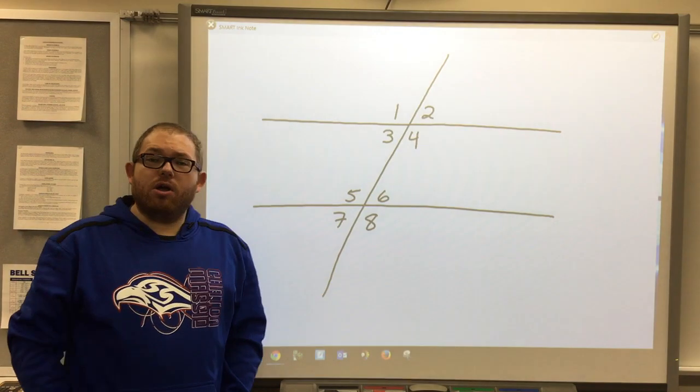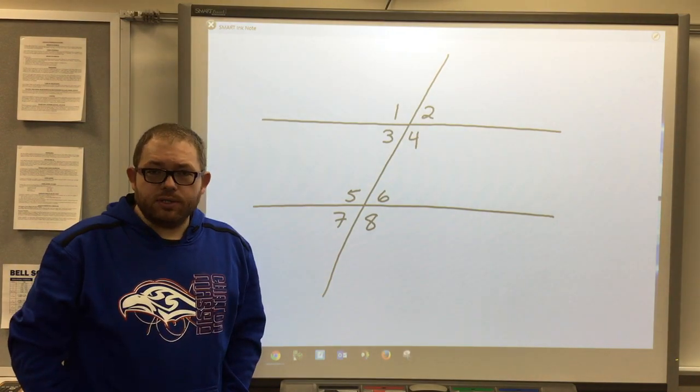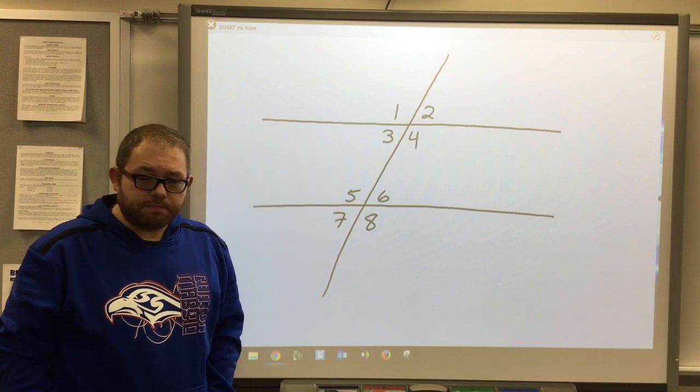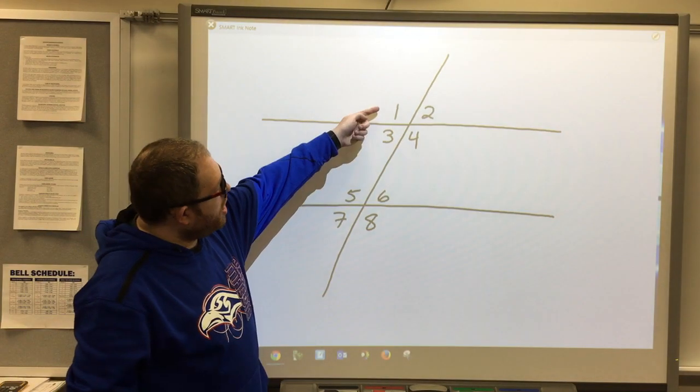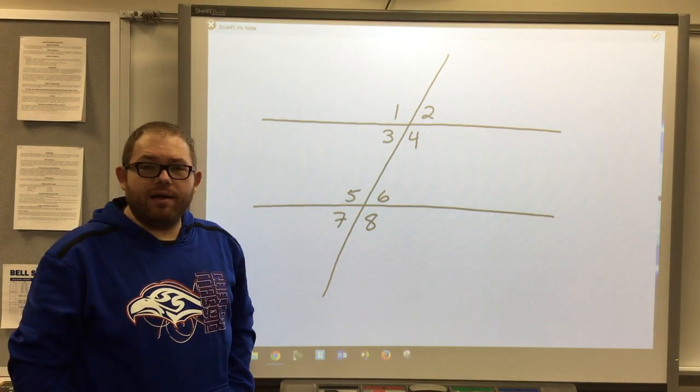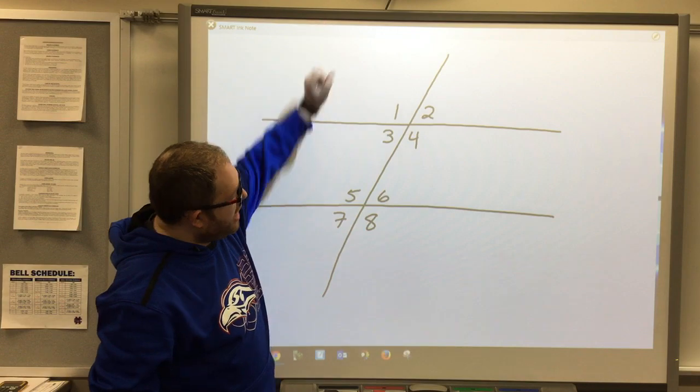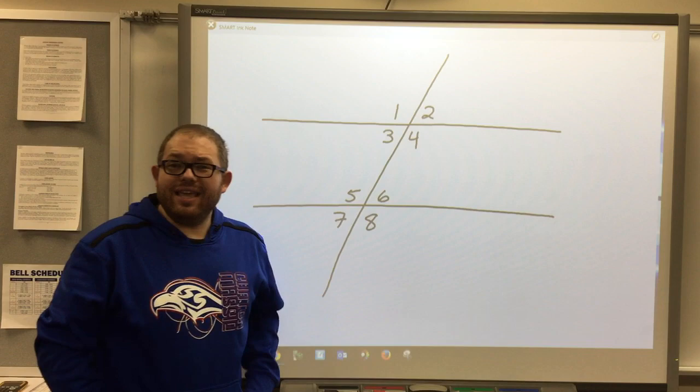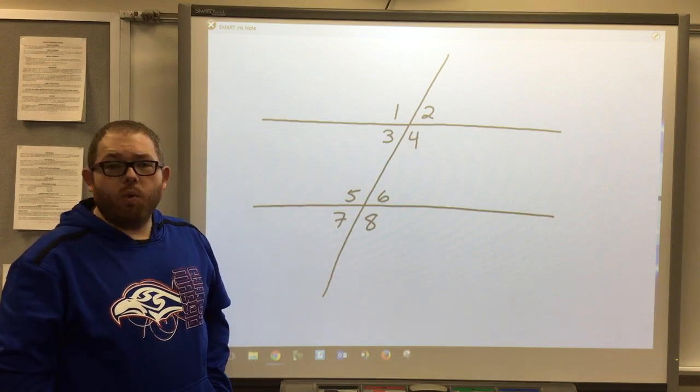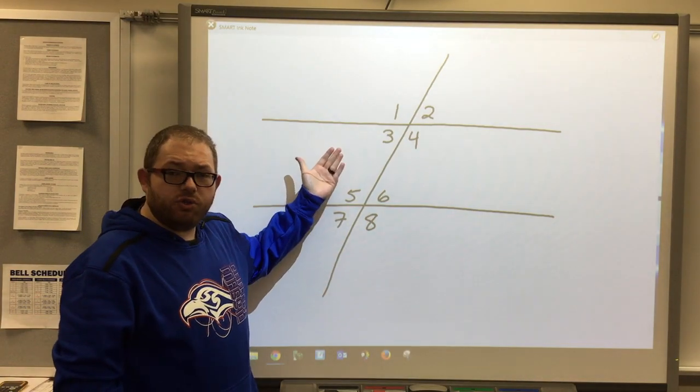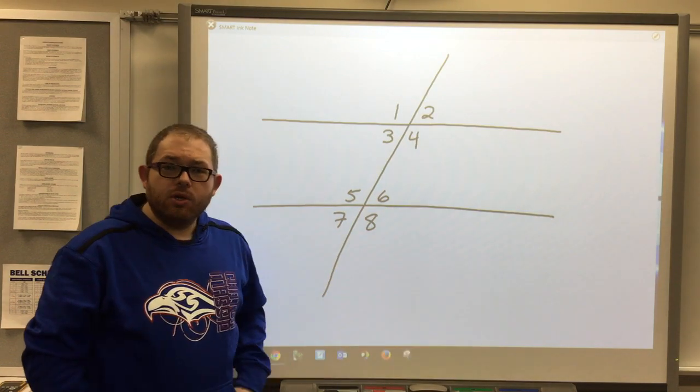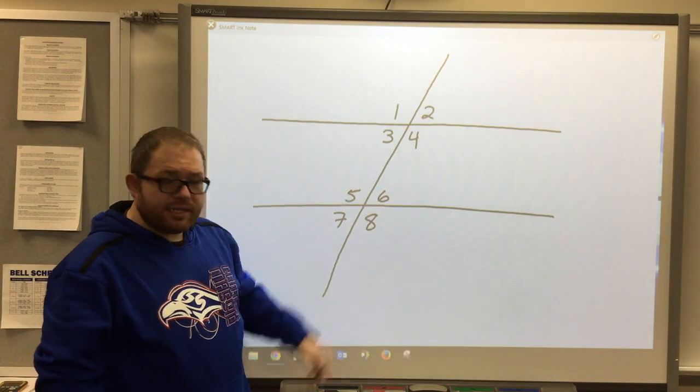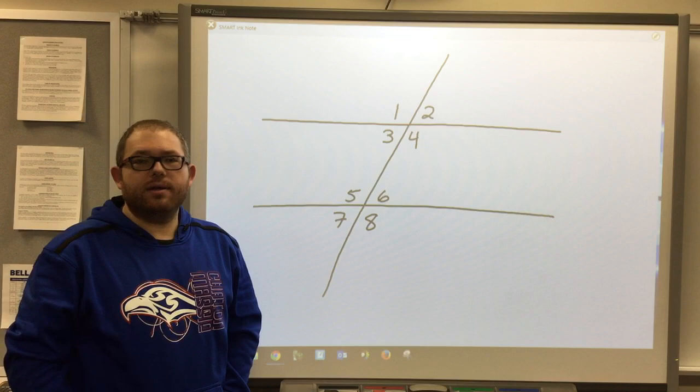Now there are also other angle pairs. The next one I'll talk about is alternate exterior angles. Angle one is on the outer portion of the diagram towards the outside. Angle eight is also towards the outside. Notice that one is on the left of the transversal and one is on the right. They are on alternate sides. So one and eight, they're called alternate exterior angles.